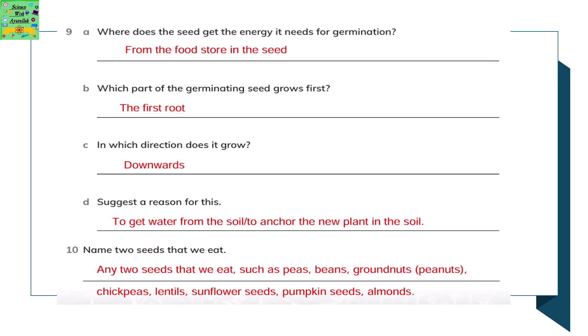Where does the seed get the energy it needs for germination? It gets it from the food store in the seed. Which part of a germinating seed grows first? The first root. In which direction does it grow? Downwards into the soil.